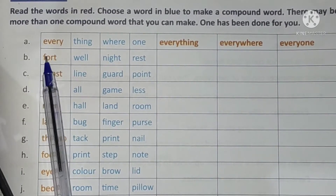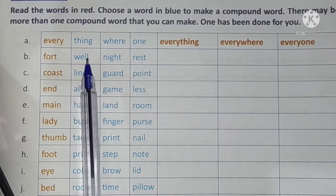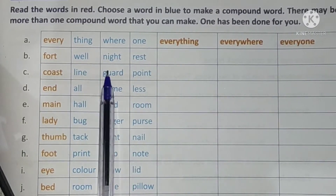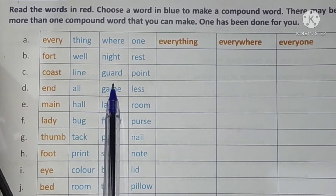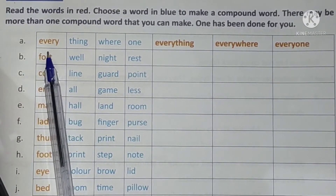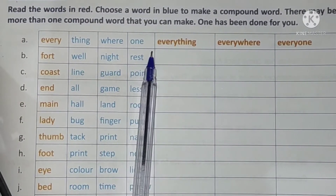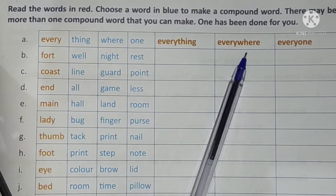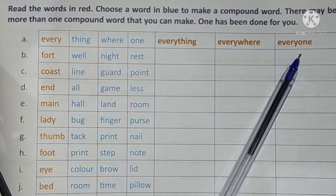Red color ka word lena hai aur phir blue color ke word se jod ke likhna hai. Agar woh nahi jod sakta toh column khali rahegi — it will be blank. The first one has already been done for us: 'every' combined gives us everything, everywhere, and everyone.